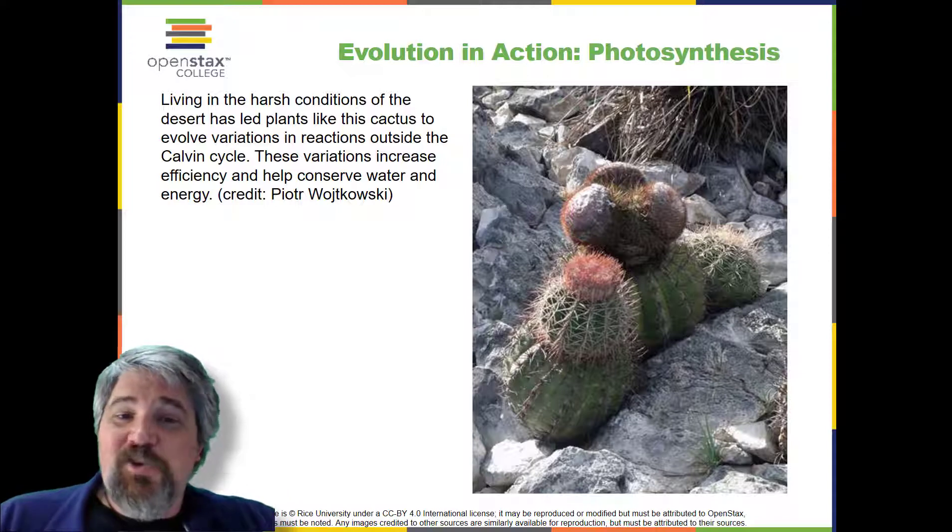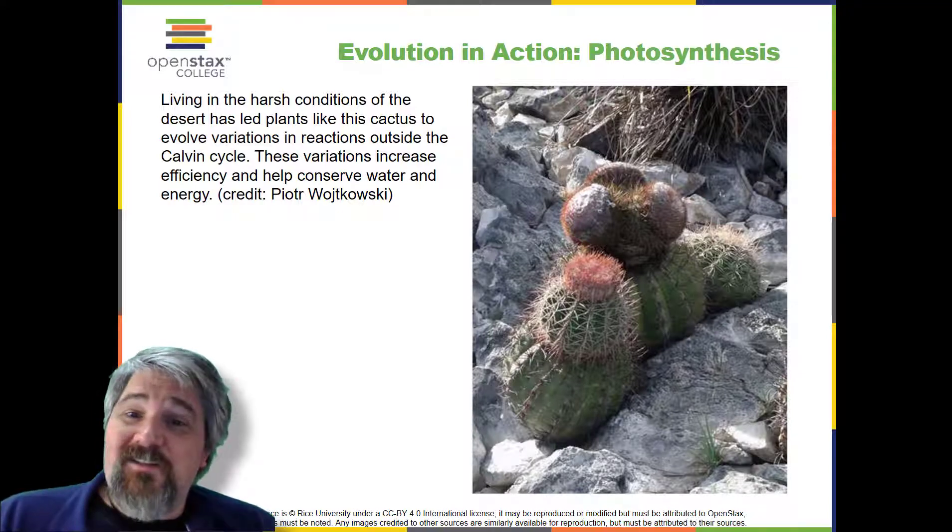Photosystems function to absorb light and use electron transport chains to convert energy. The Calvin cycle reactions assemble carbohydrate molecules with this energy. However, as with all biochemical pathways, a variety of conditions leads to varied adaptations that affect the basic pattern.